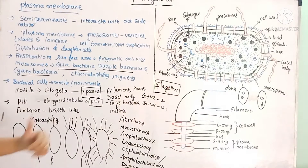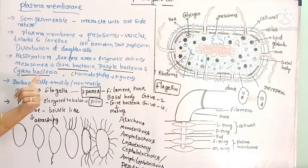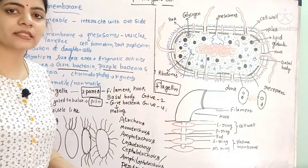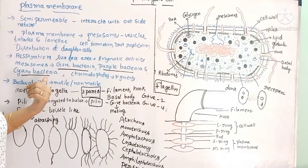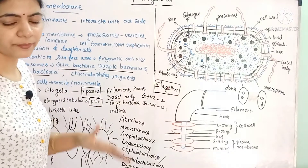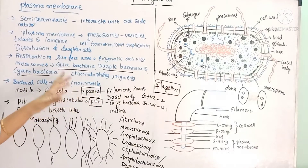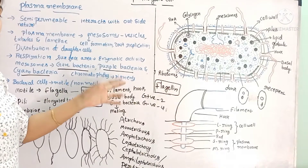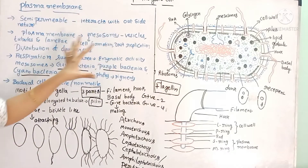Mesosomes are mainly found in gram positive bacteria. Photosynthetic bacteria, purple bacteria, and cyanobacteria also have special structures similar to mesosomes, called chromatophores. Chromatophores contain photosynthetic pigments.